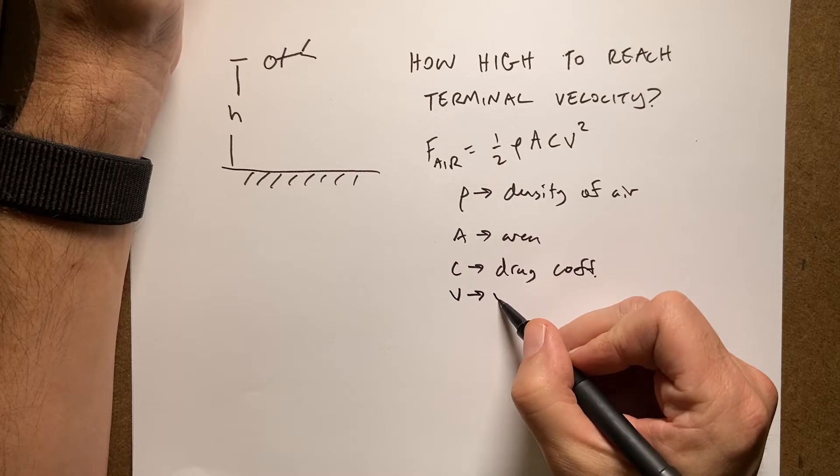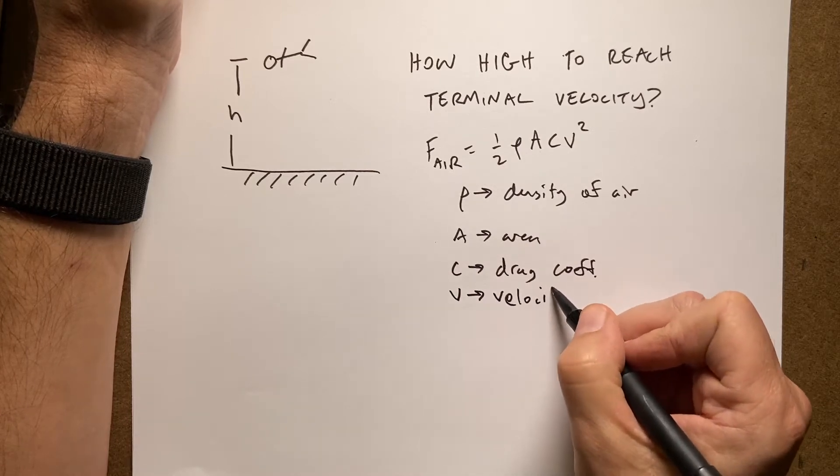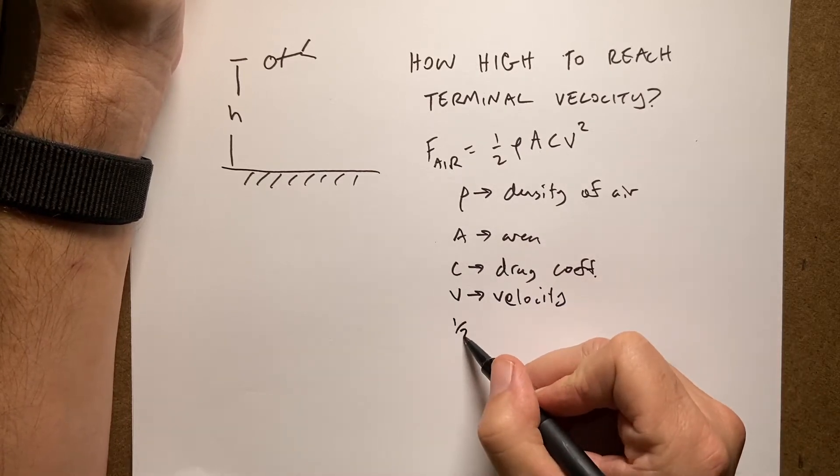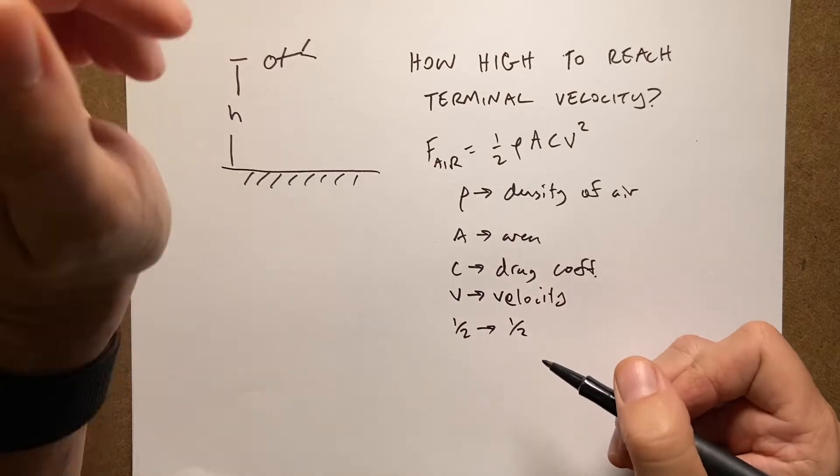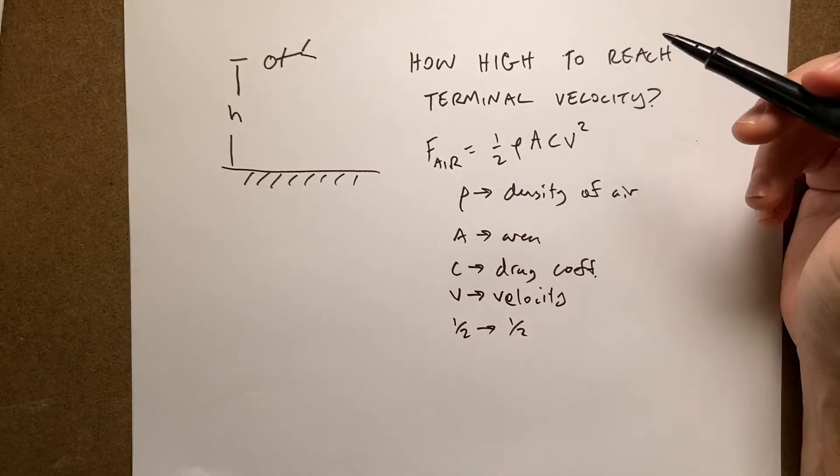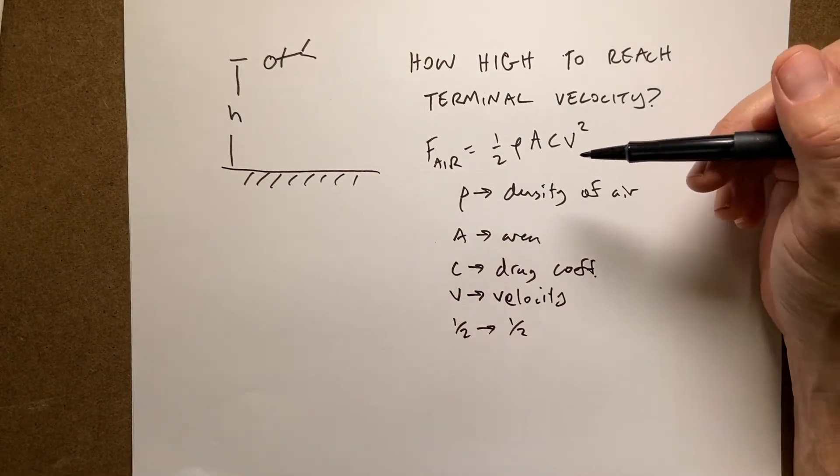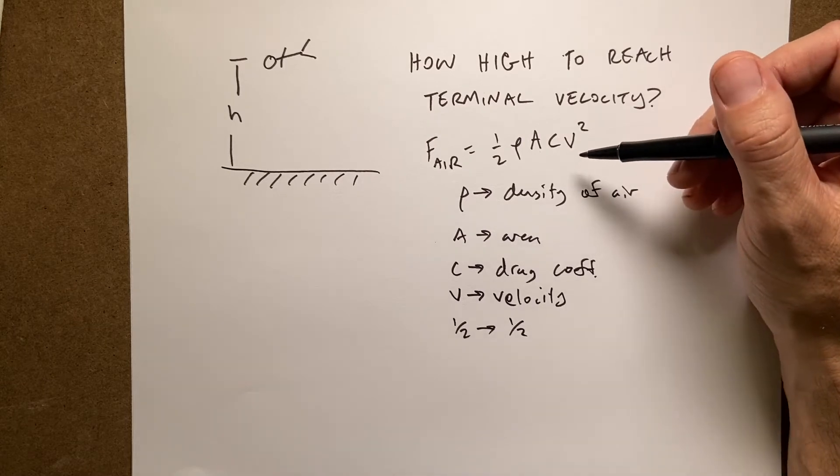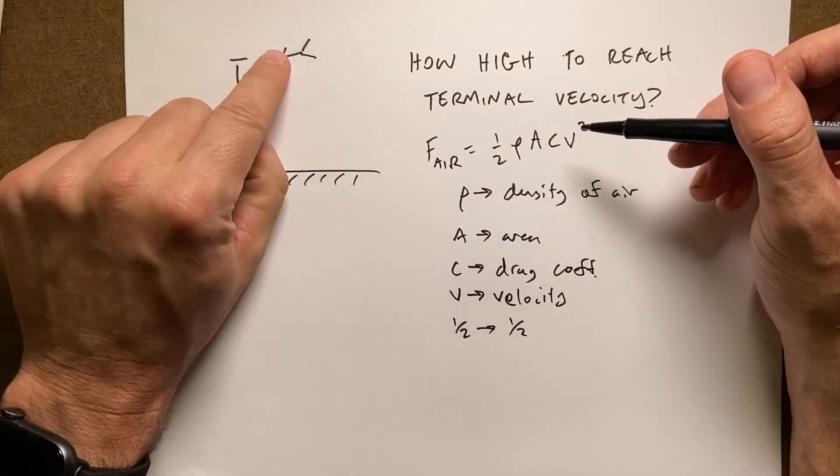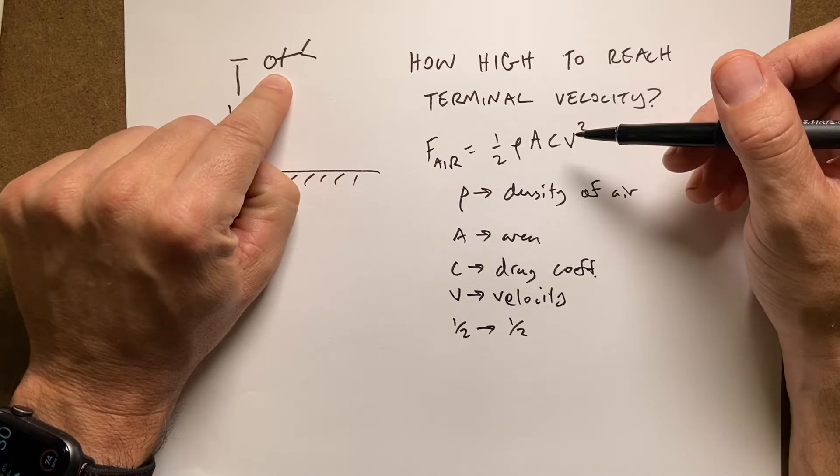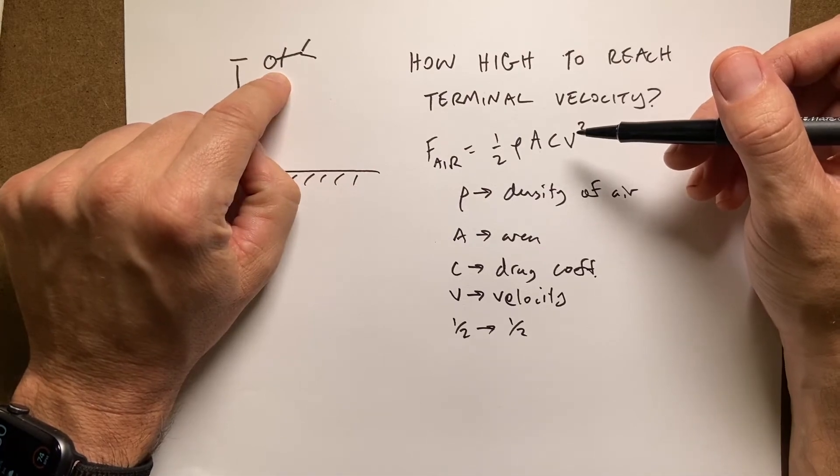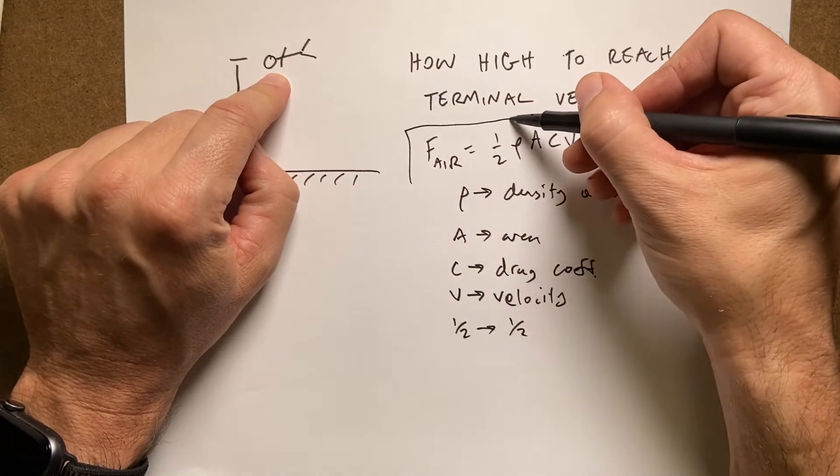This says that the air resistance is proportional to these things where V is the velocity of the object. A is the area of the object, the cross sectional area. C is the drag coefficient. And V is the velocity. And one half is one half. That's a joke. It is one half.